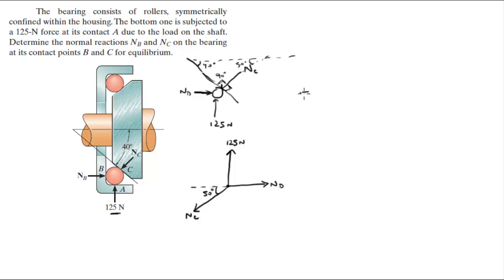Just by looking at this free body diagram, you can tell that the sum of the forces in the Y is equal to 0. So the Y component of this is negative Nc sine of 50 degrees plus 125 is equal to 0. So if you solve for Nc, you get that Nc is equal to 163.2 N.